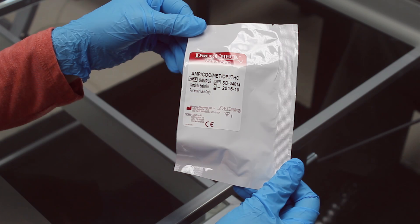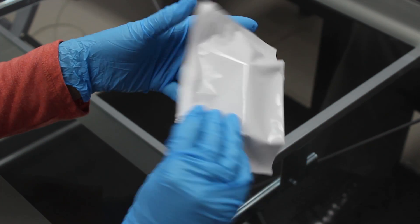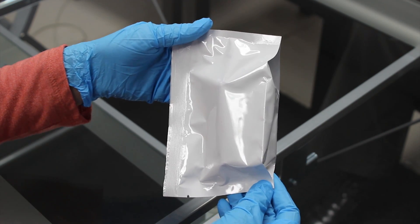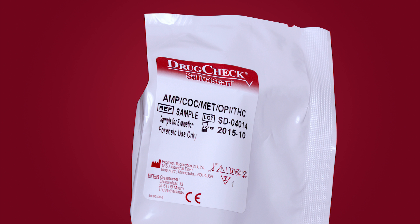Visually inspect the foil pouch containing the test device to ensure that the pouch is intact. Do not use if the foil pouch is not intact, with seal broken, tears, holes, etc. Verify that the expiration date printed on the pouch is valid. Do not use if expired.